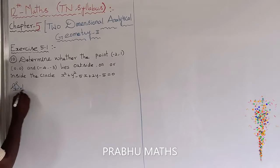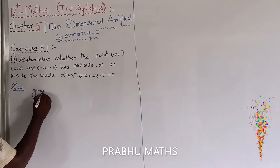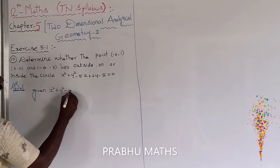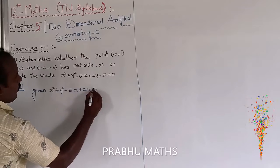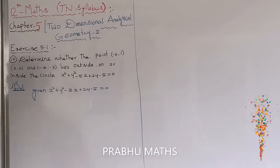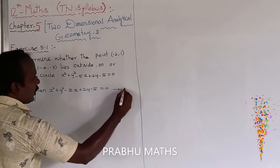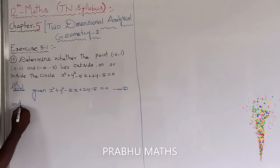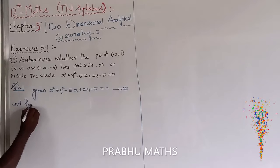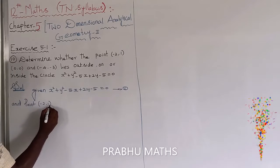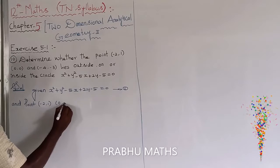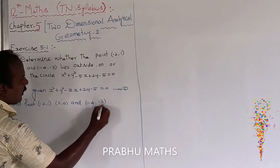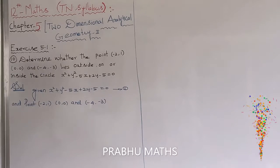Solution. The given circle equation is x squared plus y squared minus 5x plus 2y minus 5 is equal to 0. This is equation number 1. The points given are: first point minus 2 comma 1, next 0 comma 0, and minus 4 comma minus 3.